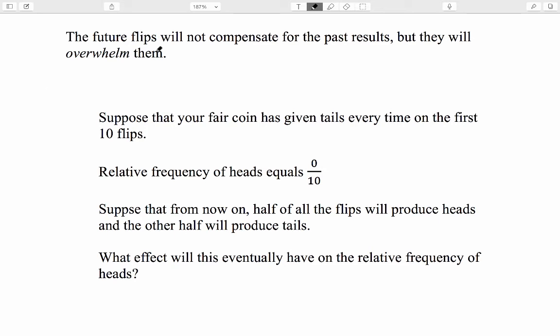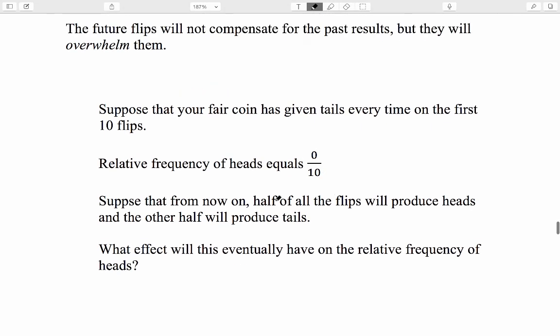Sam is correct. The future flips will not compensate for the past results, but, this is the key point, they will overwhelm them. So, how does that work? What does that even mean? Here's a helpful example. Like Pat's fair coin, suppose that your fair coin has given tails every time on the first 10 flips. As of that moment, the relative frequency of heads equals 0 out of 10, which is 0. Suppose that from now on though, half of all the flips will produce heads, and the other half will produce tails. In other words, we'll really see the fairness of this coin on all the subsequent flips, in spite of the fact that there was a lucky run or an unlucky run of tails at the beginning.